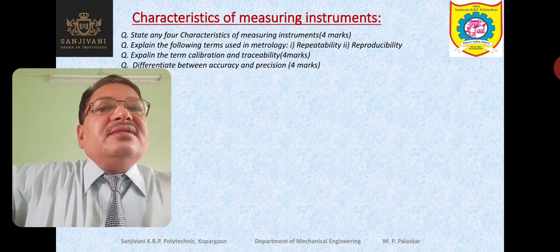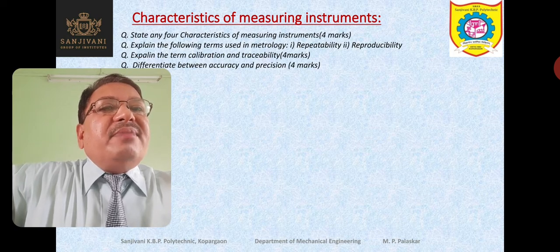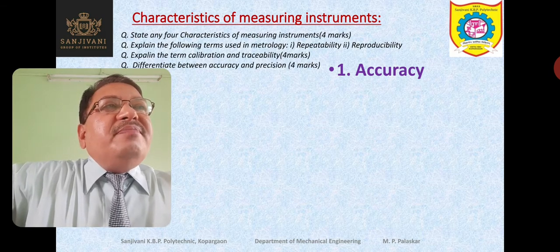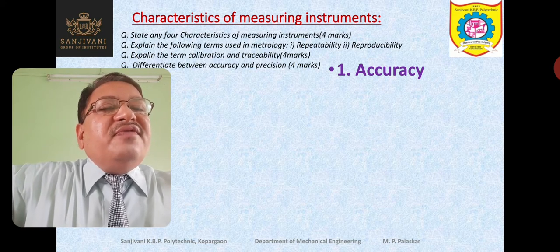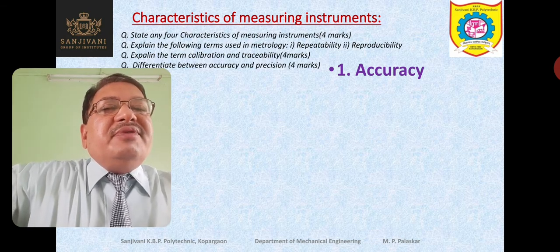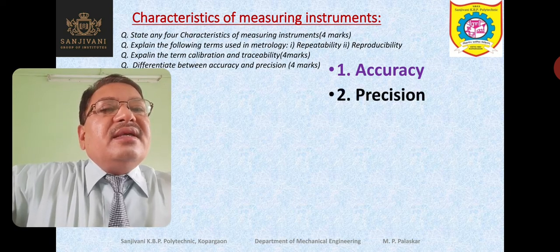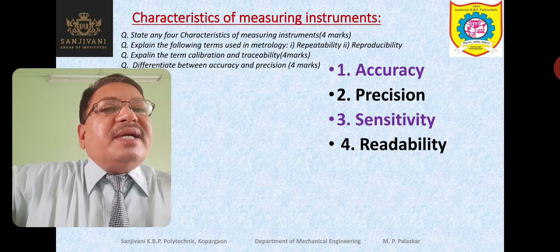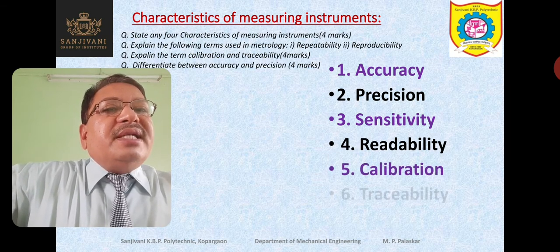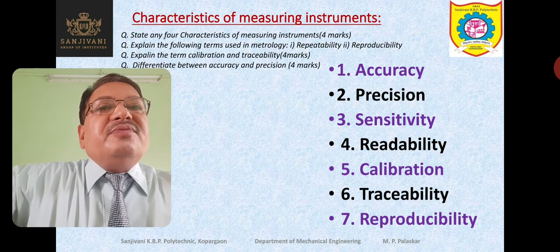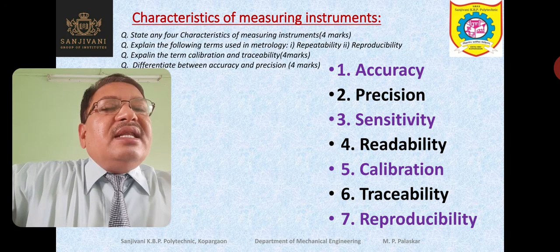Now we are going to study the characteristics of measuring instruments. What are the various characteristics of measuring instruments? Let us study one by one: first of all accuracy, precision, sensitivity of the measuring instrument, readability of the measuring instrument, calibration, traceability, and reproducibility of the measuring instrument. These are the characteristics of the measuring instruments. Let us study these characteristics one by one.